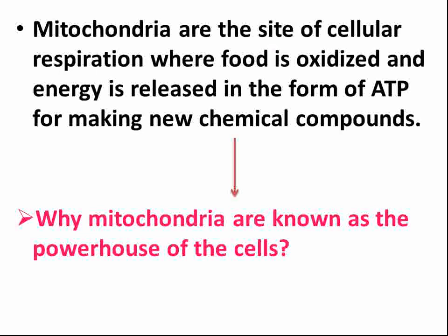Mitochondria are the site of cellular respiration — the place where cellular respiration occurs. When food is oxidized, energy is released in the form of ATP, which stands for adenosine triphosphate. This energy is used for making new chemical compounds, which is why mitochondria are known as the powerhouse of the cell.